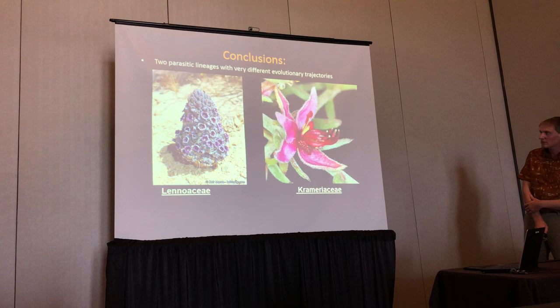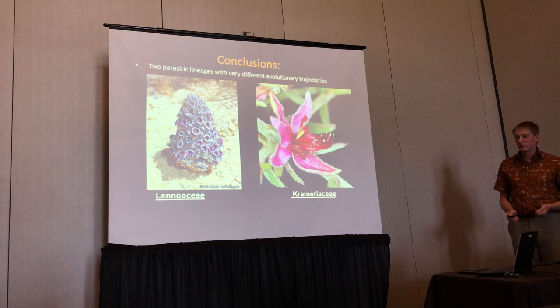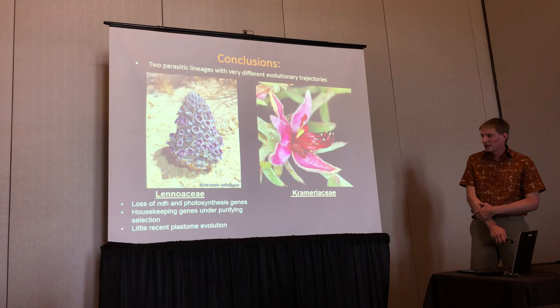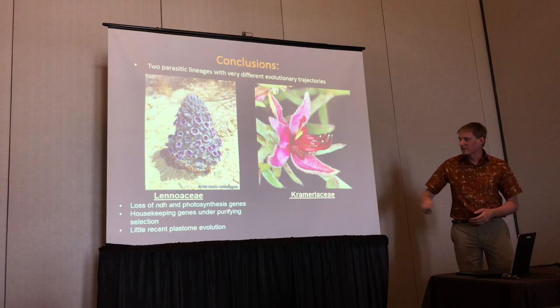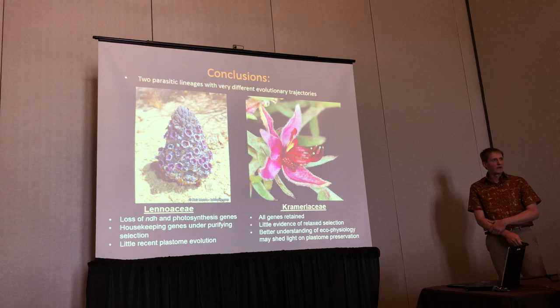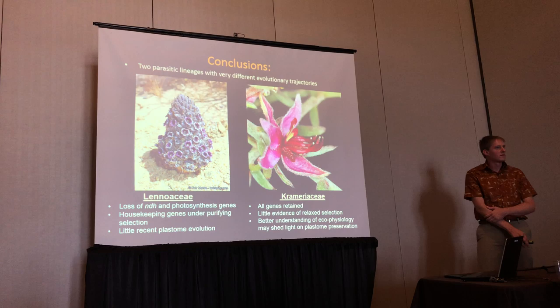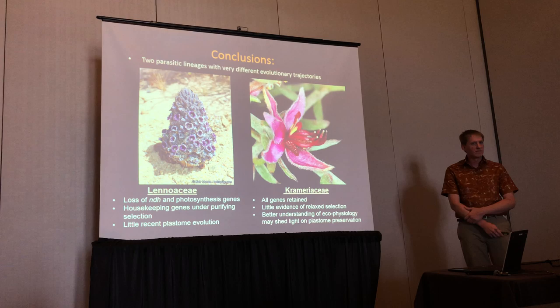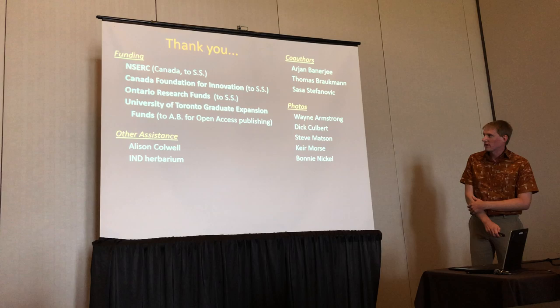Just to very quickly conclude: we have two parasitic lineages with very different evolutionary trajectories. Although they've been around about the same amount of time and live in the same place, the Lenoacee have shown substantial loss in their plastome as they've moved to being complete holoparasites. Crameria has shown the opposite pattern, in which there still appears to be genuine photosynthesis that seems to still be under strong purifying selection. It would be really interesting to do a lot more ecophysiology studies on these organisms to understand exactly what benefit they might have from retaining photosynthesis even while still able to parasitize. Thank you.